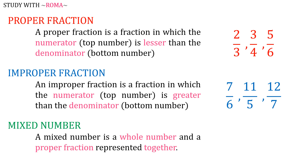And when we say mixed number, it is a whole number and a proper fraction represented together. For example, 2 and 1 third, 3 and 2 fifths, and 4 and 5 over 9.